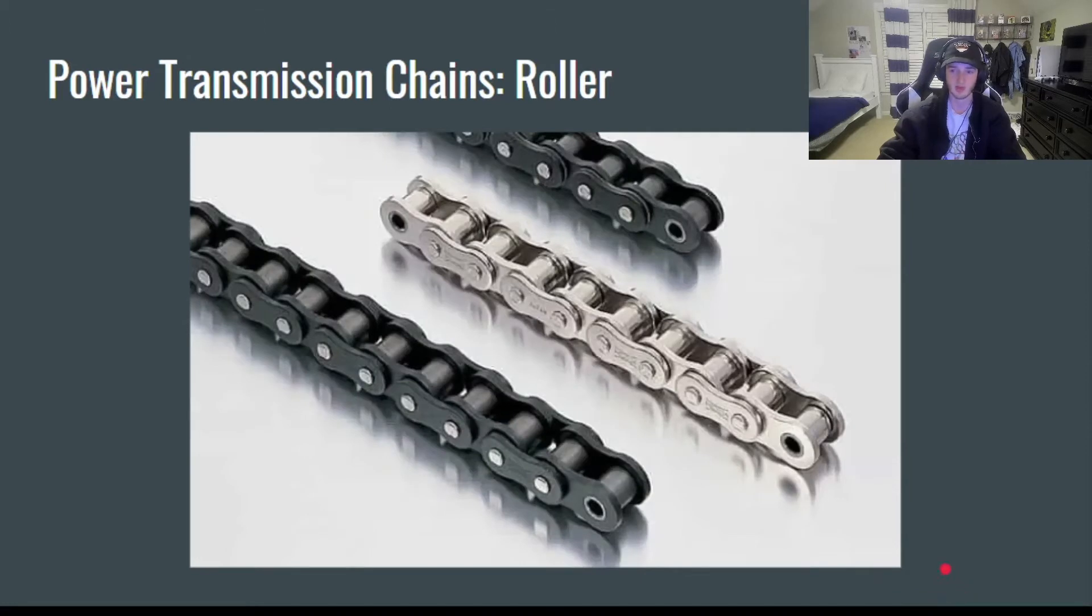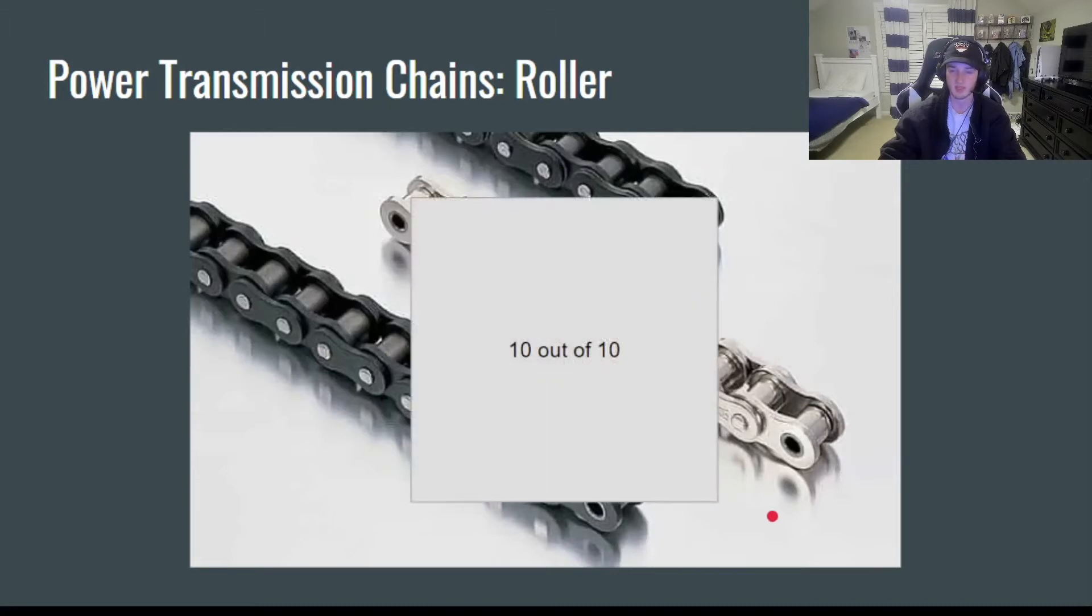Moving on to power transmission chains, we got the roller chain. You can probably guess why they're called the roller chain. Yeah, that's right, these things here inside the bushes roll. They're the most common and efficient type of power transmission chain, and you'll see them pretty much everywhere. They're used in bikes, cars, motorcycles, tons of stuff. I'll give that a 10 out of 10.